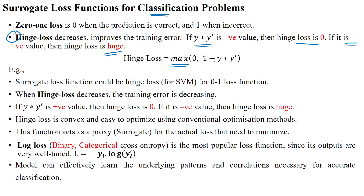The hinge loss surrogate is useful for SVM classification. Another surrogate loss function is log loss, which has two forms: binary cross entropy for binary class classification, and categorical cross entropy for multi-class classification. So instead of the zero-one loss function we can use advanced alternate loss functions — hinge loss, binary cross entropy, and categorical cross entropy — as surrogate loss functions for classification problem statements. Thanks for watching.